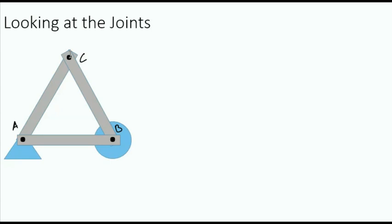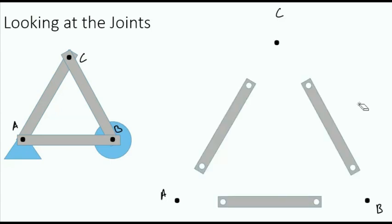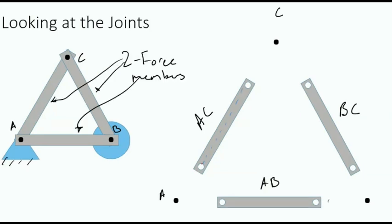Let's look at a truss structure made by one triangle. In order for this to be a truss structure, each member must be individually connected by pins at the joint. We have a joint or pin connection at A, B, and C. Taking the structure apart, we can see that we have three members: members AC, BC, and AB. These three members are individual from each other and connected by pins A, B, and C. The pin goes through a hole at these locations of the members. Assuming members AC, AB, and BC are two-force members, let's draw the internal forces on the members from the pins.